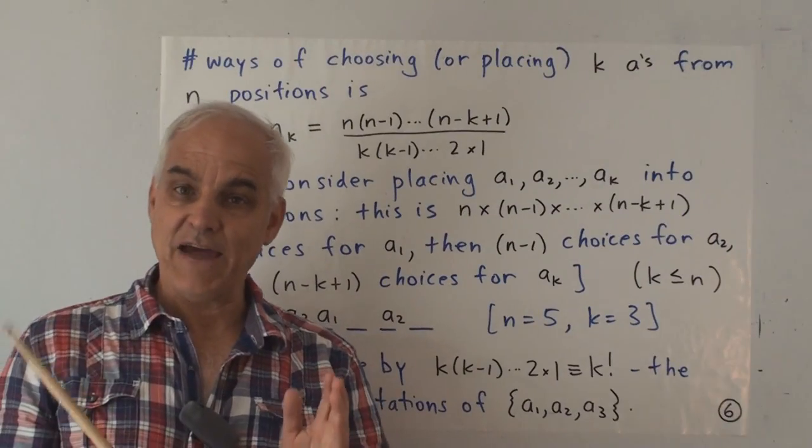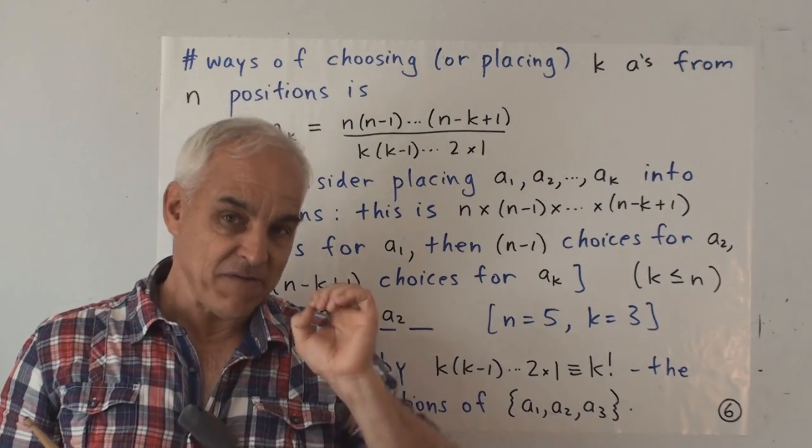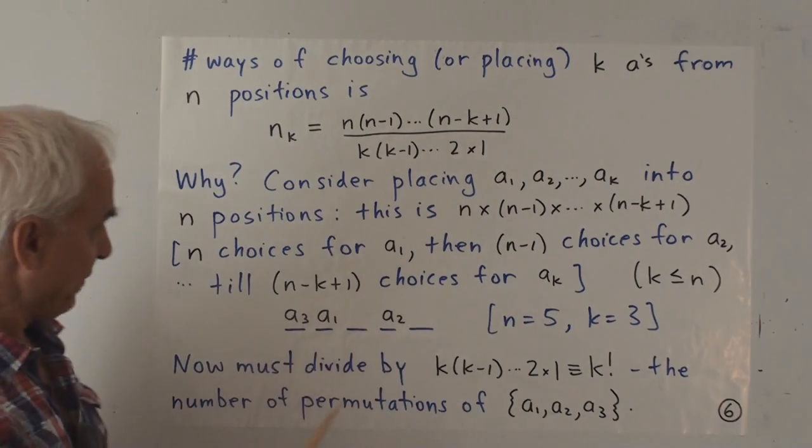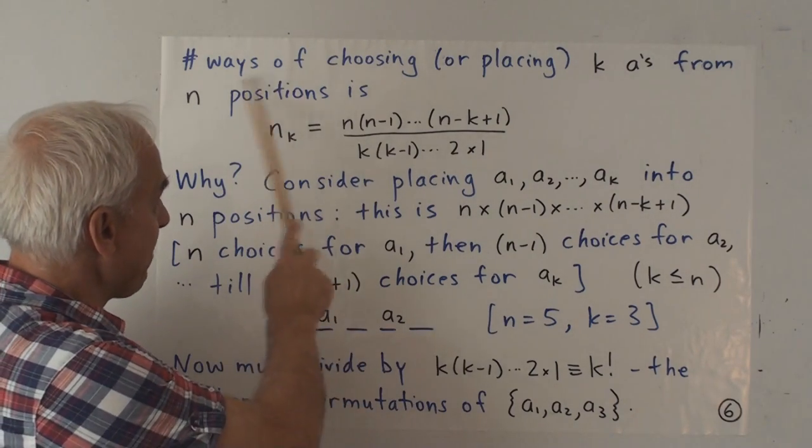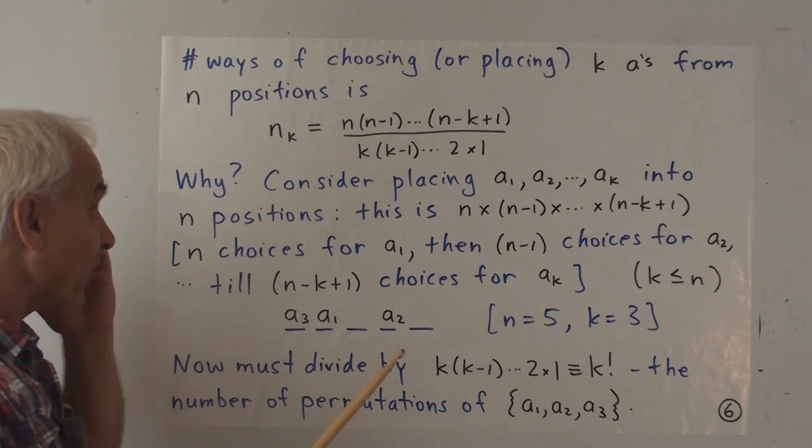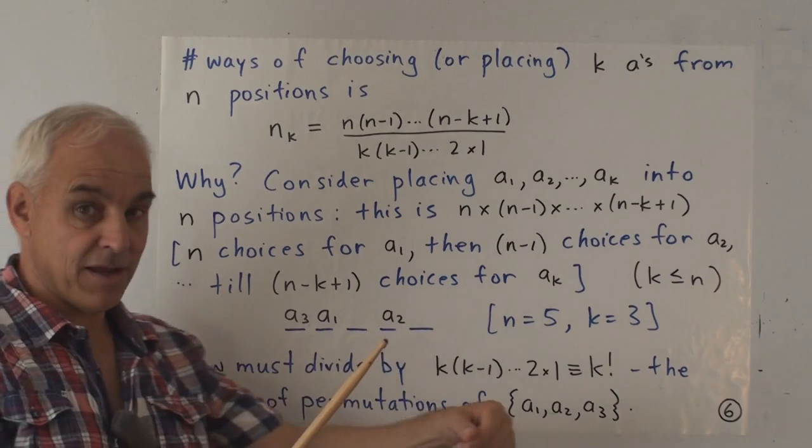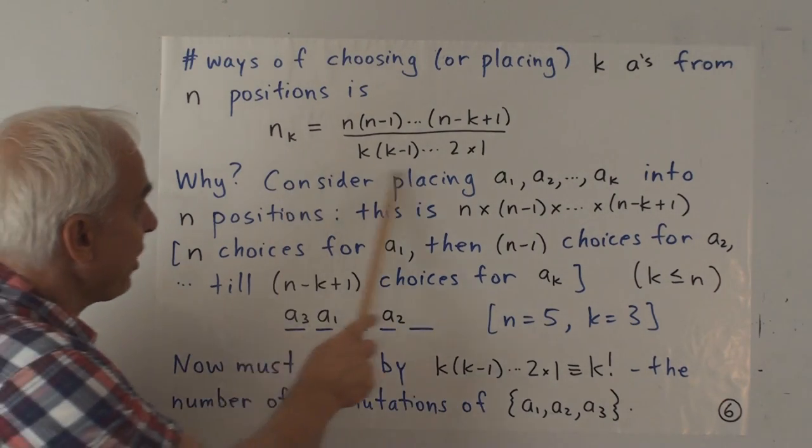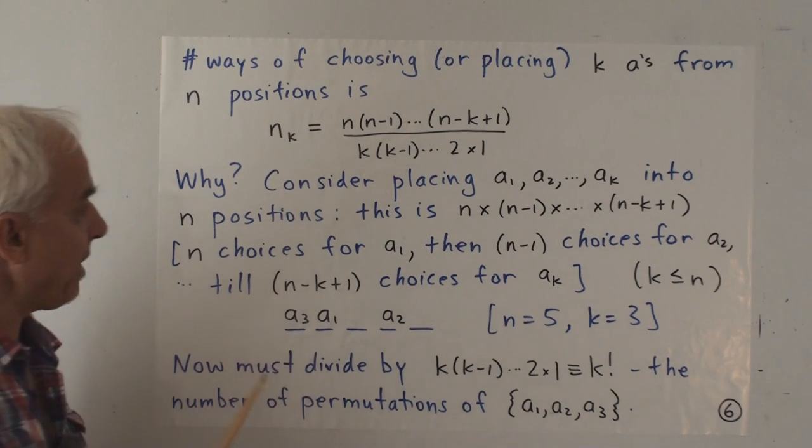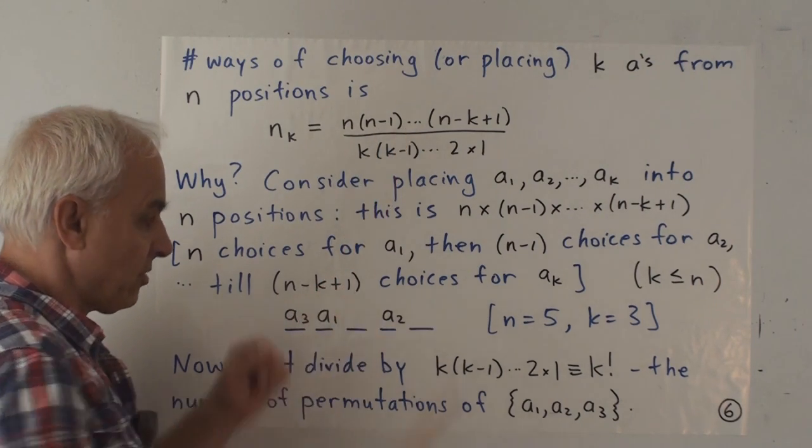Of course, we'd like to have not just a combinatorial interpretation of this coefficient, but also an efficient way of computing it. And this formula here for it, so this is the number of ways of choosing k a's from n positions, or we might also say it's the number of ways of placing k a's in a row of n positions. It's this number here. And sometimes it's written n with a small k below it.